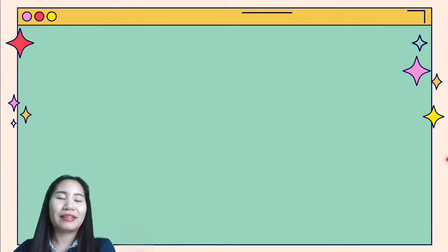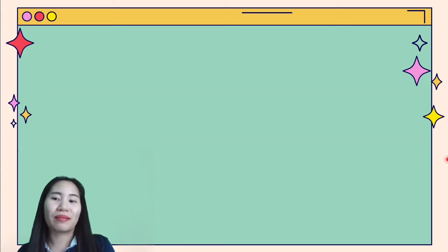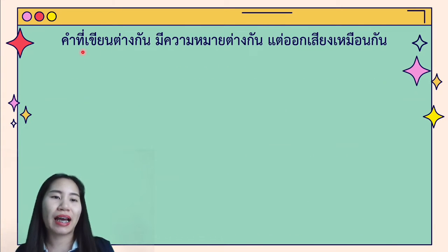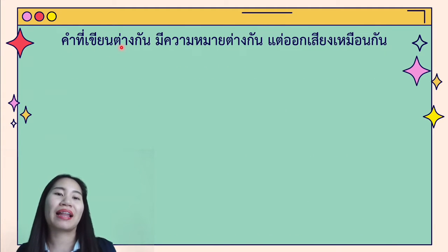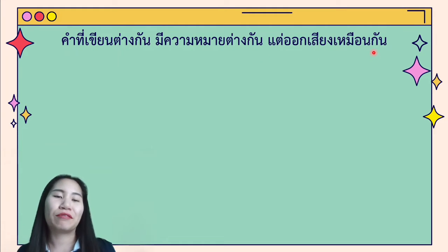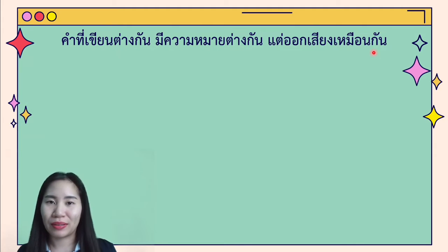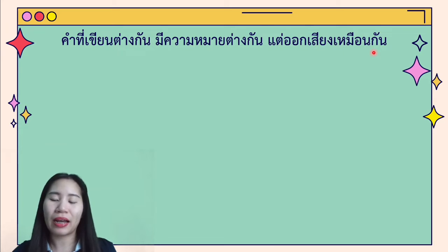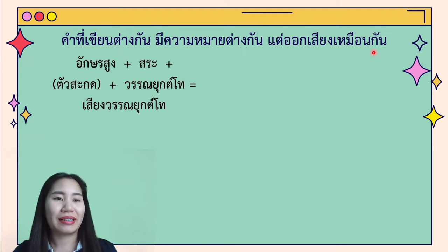Let's see what คำพ้องเสียง is. คำพ้องเสียงคือ คำที่เขียนต่างกัน มีความหมายต่างกัน แต่ออกเสียงเหมือนกัน. Different writing, different meaning, but the pronunciation is the same. Now let's see the first type.